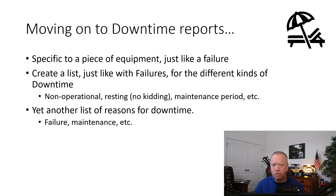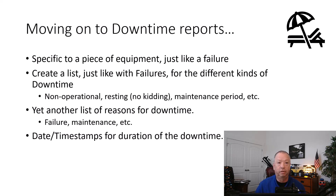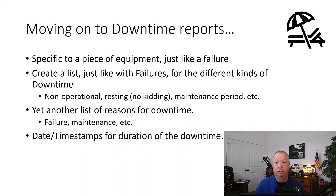Then create another list to describe the reasons for the downtime. Failure and maintenance may be obvious ones, but there can be others. Then we come back to dates and timestamps again, with some added detail. We need to know approximately when the downtime began and how long it lasted — that could be a start time, an end time, a start time and a duration, however you wish to record it. Don't forget to include troubleshooting and restart times, as those can play a role in the total downtime. Capture every hour that the equipment is not producing.